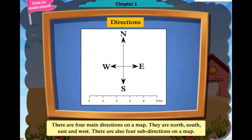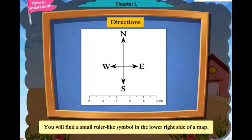There are also four sub-directions on a map. You will find a small ruler-like symbol in the lower side of a map.